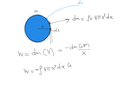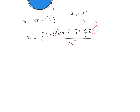Instead of the mass m of the sphere of radius x, we can write density times volume: ρ × (4/3)πx³. Substituting and dividing by x, one factor of x from the denominator and the x² terms combine, giving x to the power of 4 in the expression.